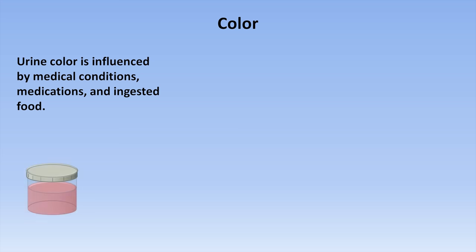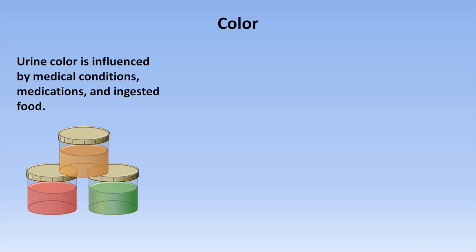Outdoorsmen will frequently use the color of their urine as a rough guide of how well hydrated they are. While there is definitely a strong relationship between urine color and hydration, it can potentially be influenced by a great number of other things, such as medical conditions, medications, and even some foods. The list of things which can cause unusual colors in the urine is extremely long, but I'll highlight the most common and/or concerning.